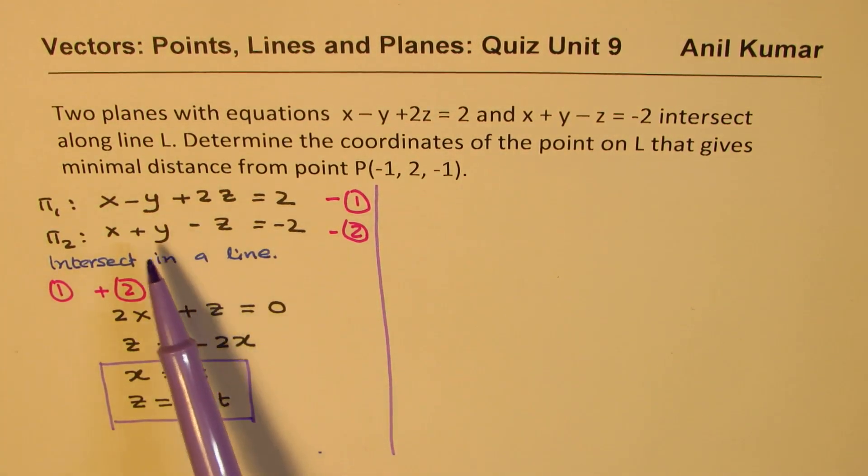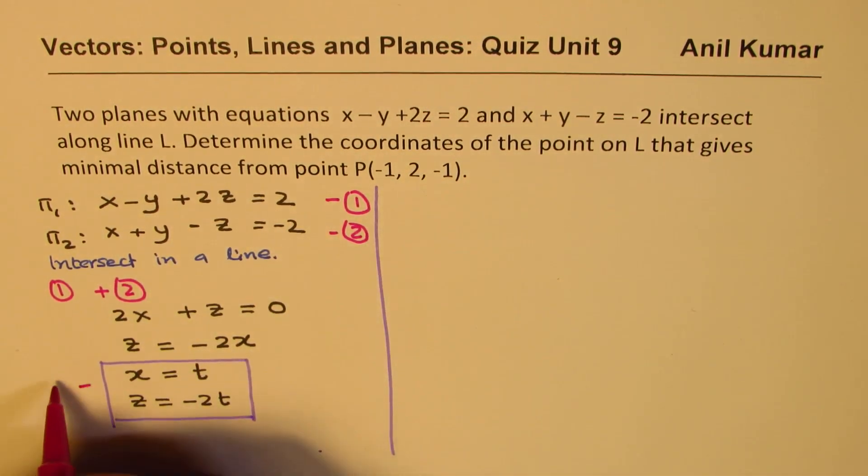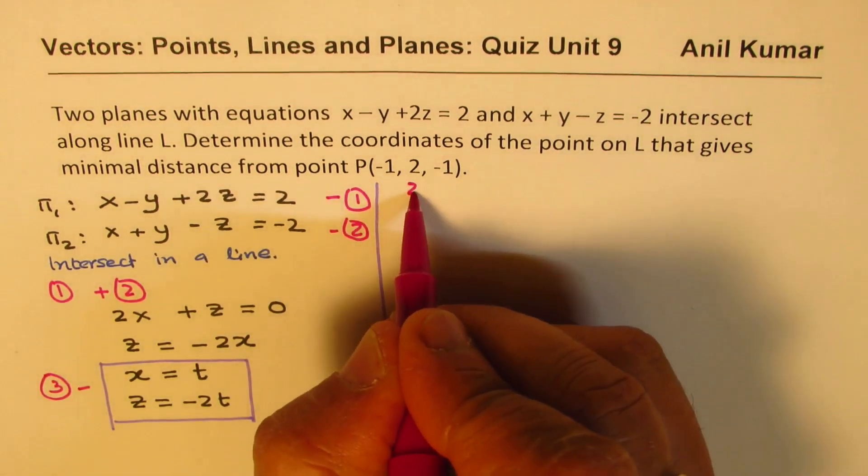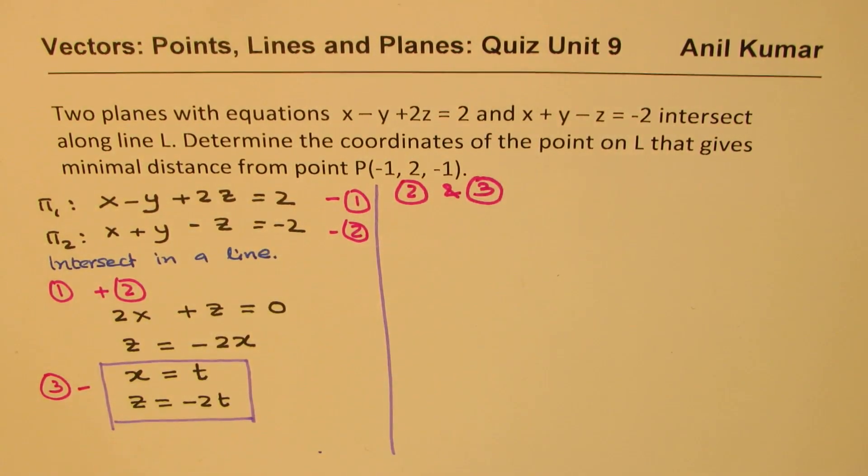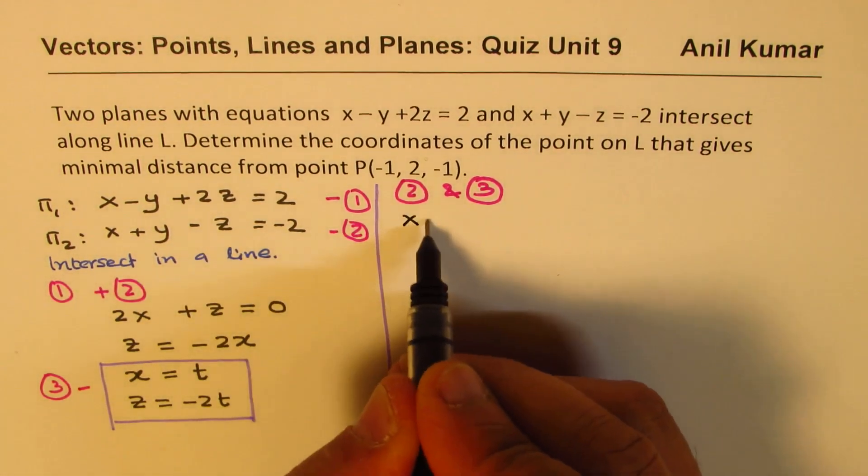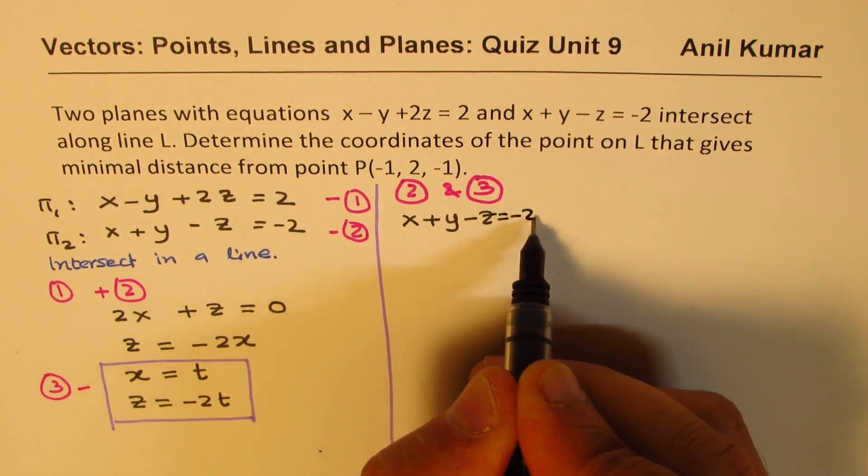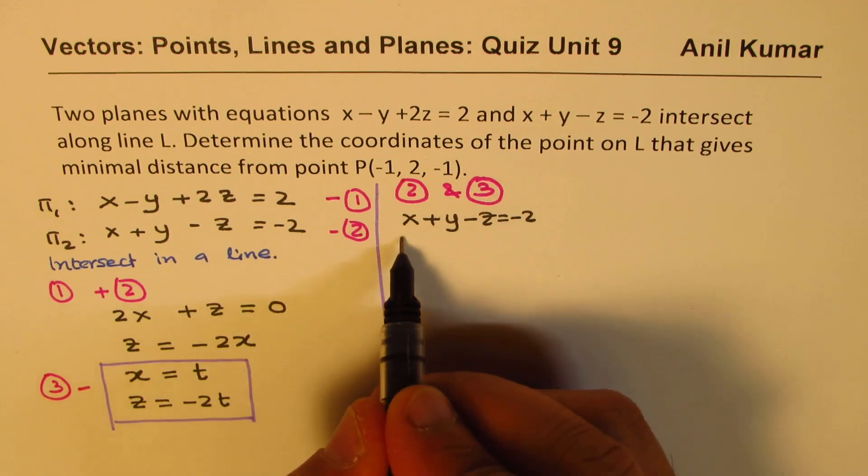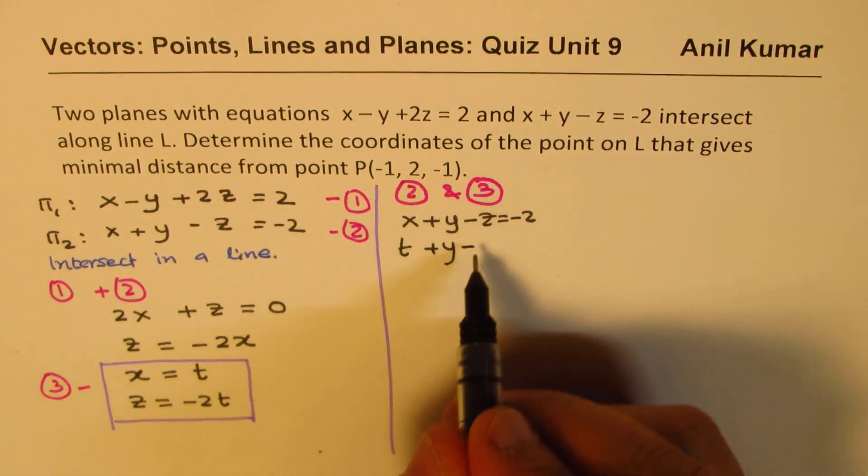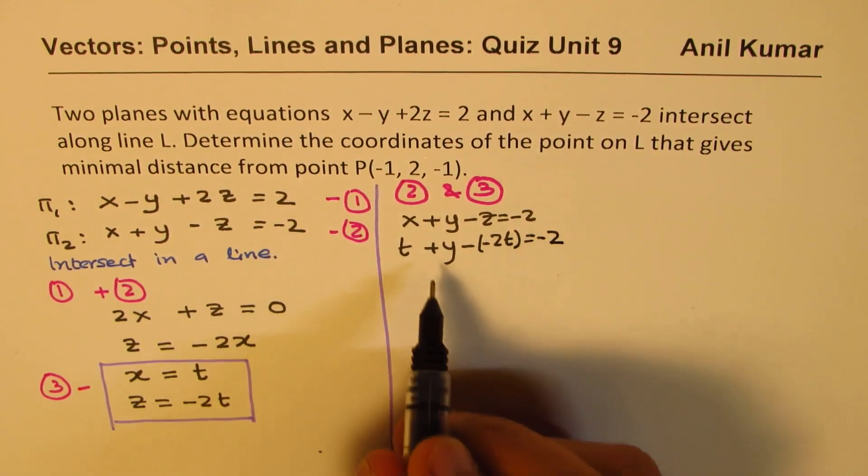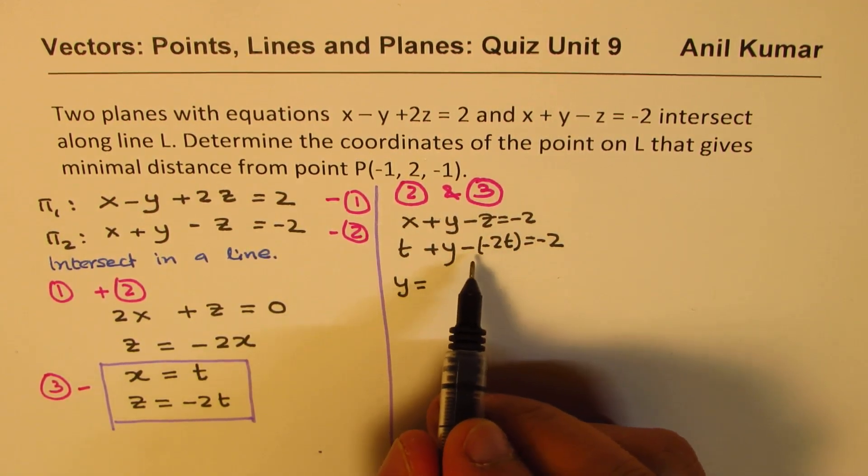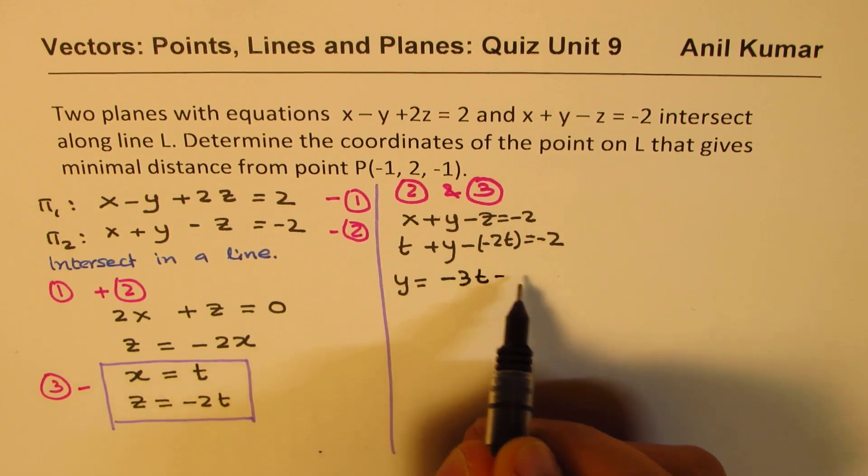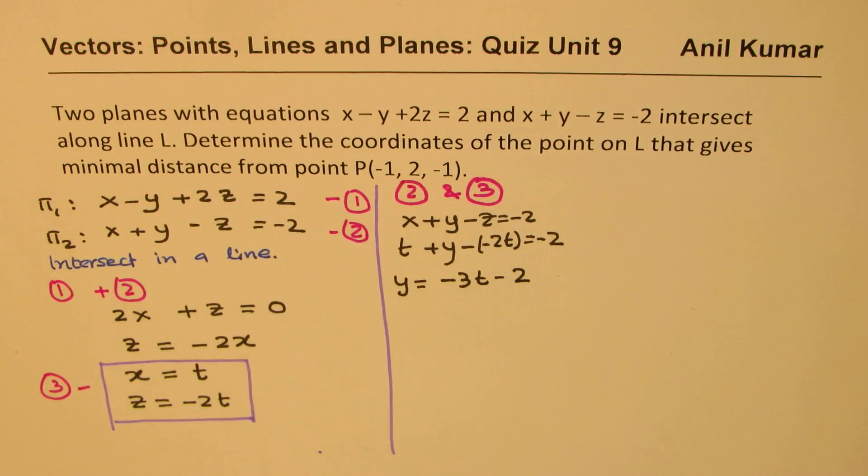Now we need to find y also. We can use the second equation, substitute t and minus 2t for z to get y. From equation 2 and 3: x plus y minus z equals minus 2. Instead of x, I'm going to place t here, and instead of z, minus 2t, equals minus 2. So y equals minus 3t minus 2. That is the value of y. So we've got x, y, and z.